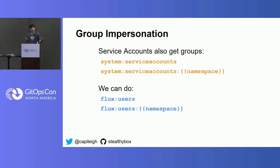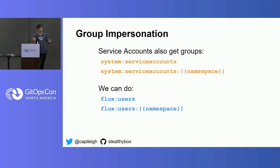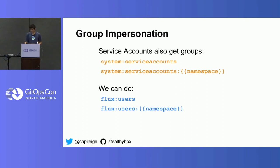You can also impersonate groups. Every service account actually has a couple of groups tacked on: system:serviceaccounts, which is every service account across the entire cluster, and then the namespace group as well. So if you wanted to target a particular number of service accounts from some namespace, or as a cluster administrator wanted to role bind to all service accounts from a team's namespace, you can actually do that with a group. With role-based access control in Kubernetes, it's important to know that namespace role bindings can target service accounts and any username — including service accounts from other namespaces. That's natively possible already, and it's important for the rest of the proposal.